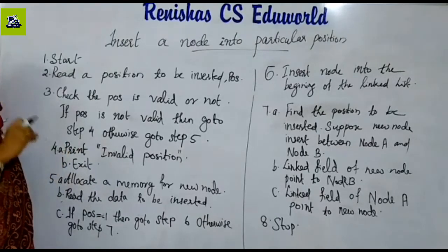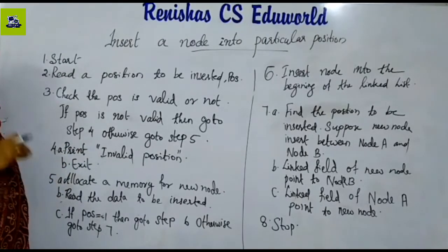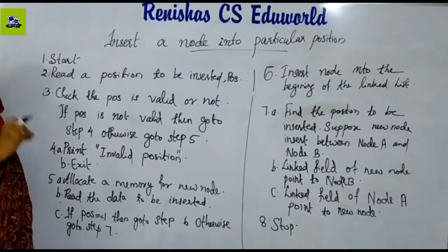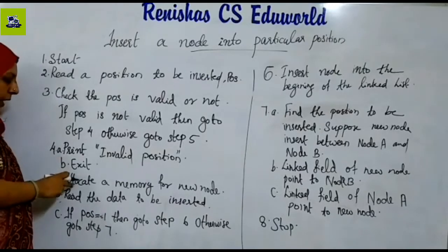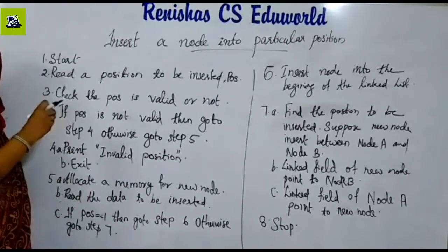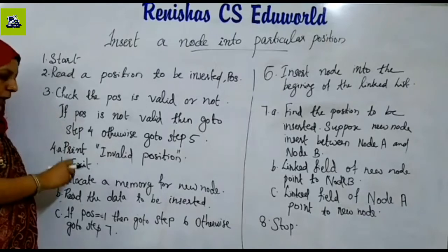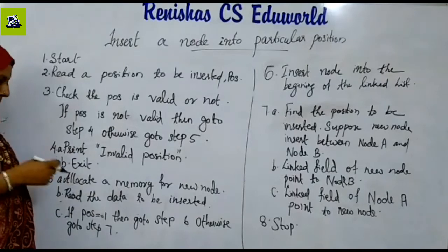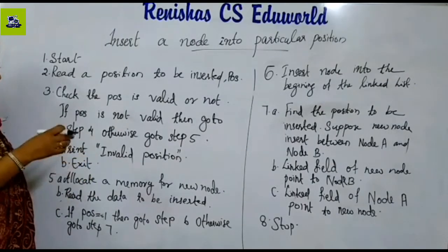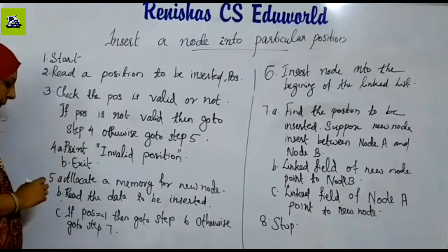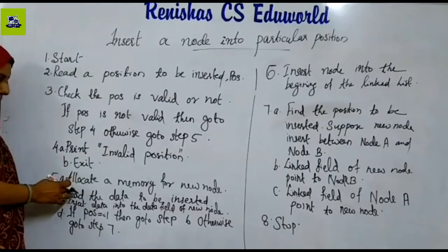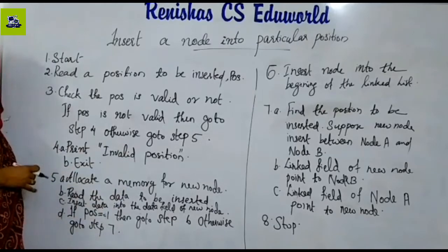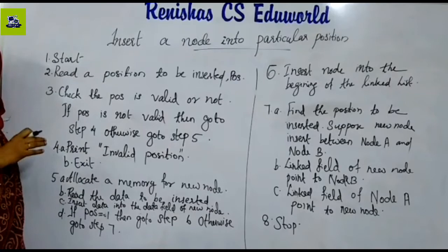Now, if the position is valid, we allocate memory for the new node. The new node will be allocated in that area. In that particular position, we insert the data field. We read the element and assign it to the data field of the new node.